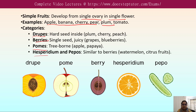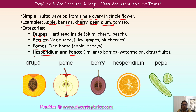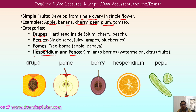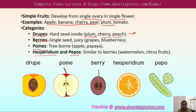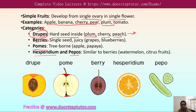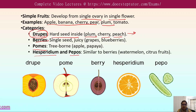Simple fruits are further categorized into drupe, berry, pome, hesperidium, and pepo. The drupe is known as a stone fruit because it has a hard, stony seed inside. Examples include plum, cherry, and peach, all of which belong to the drupe category. Next is the berry, which is a very fleshy fruit type.